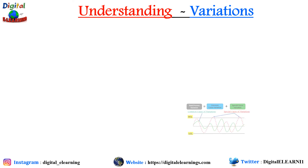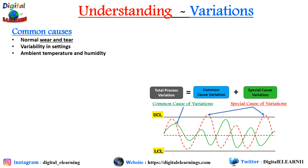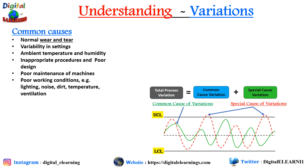Now let's look at some examples. For common cause of variation: normal wear and tear in your tools, variability in settings, ambient temperature and humidity that varies, inappropriate procedure or poor design, poor maintenance of machines, and poor working conditions such as inadequate lighting, noise, dirt, uncontrolled temperature, and ventilation issues.